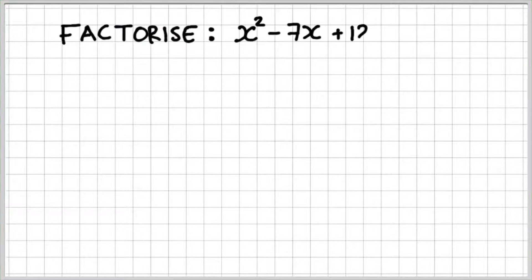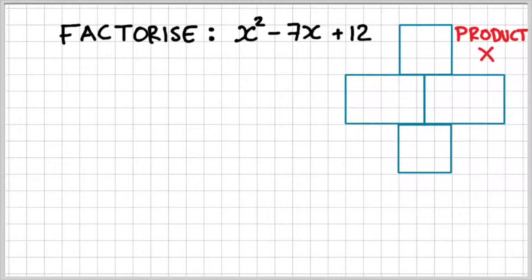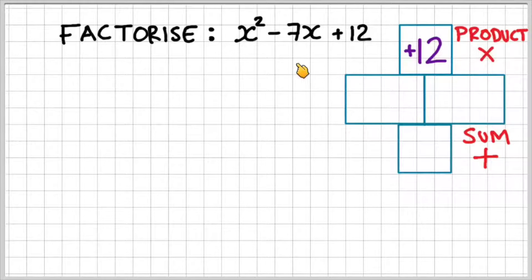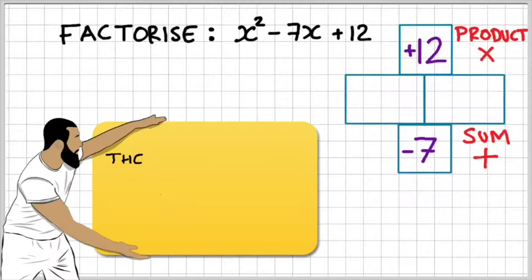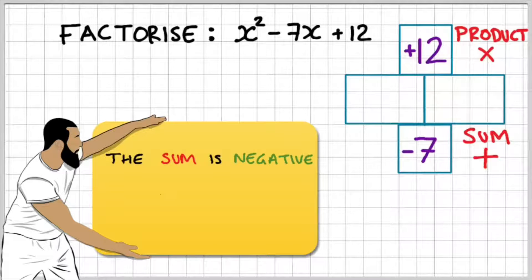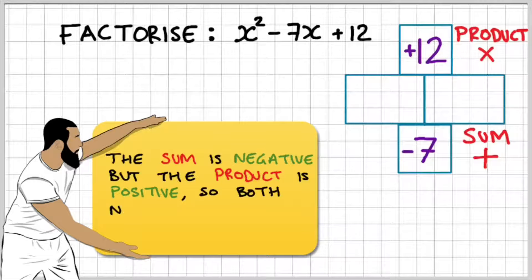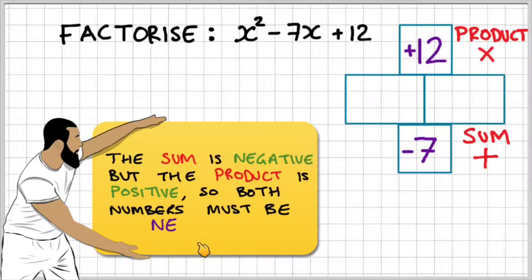Let's look at another example. Let's factorise x squared minus 7x plus 12. I'm going to use this template where I've got the product, which is the constant term 12, and then the sum, which is the coefficient of x. Notice the sum is negative, negative 7, but the product is positive. They will both have to be negative numbers.